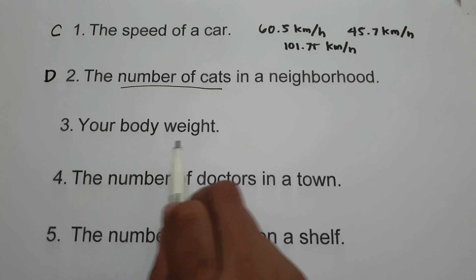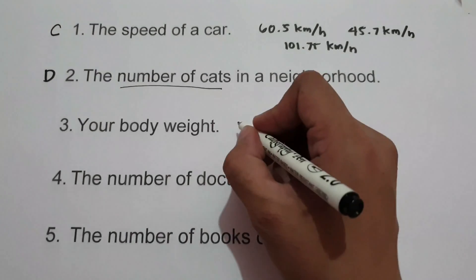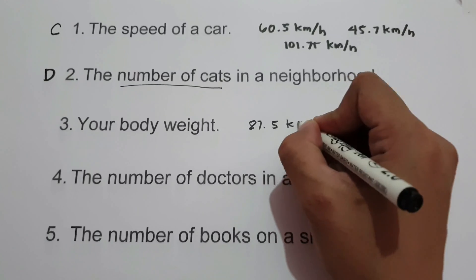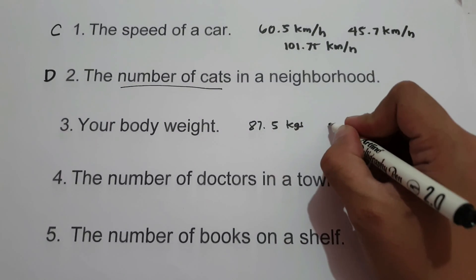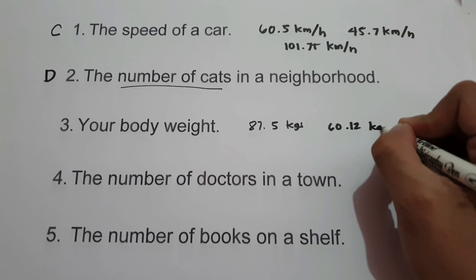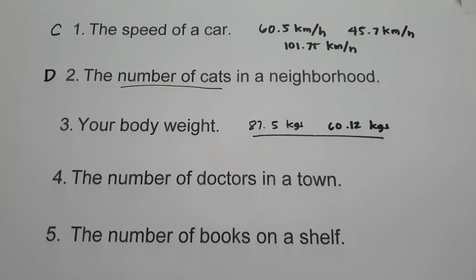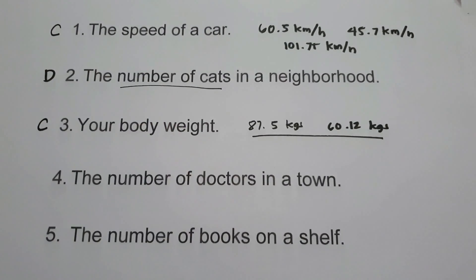On number 3, your body weight. For example, your body weight can be 87.5 kilograms or 60.12 kilograms. This information can be measured. Therefore, number 3 is an example of continuous random variable.